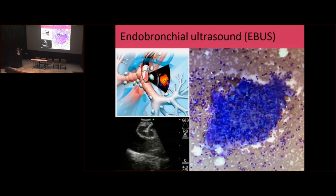Most of the time we have to do a biopsy to prove sarcoidosis under the microscope. One way to do this is a new technology called endobronchial ultrasound. We do this through a bronchoscopy — with the bronchoscope we go through the vocal cords, into the airways, and we can see those lymph glands. With a very small needle, we can biopsy the lymph gland, and at the bedside, under the microscope, we can look for the granuloma. This is perhaps the most common way to make the diagnosis of sarcoidosis nowadays.